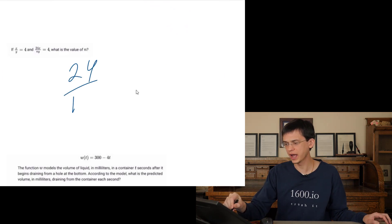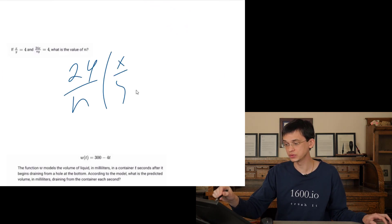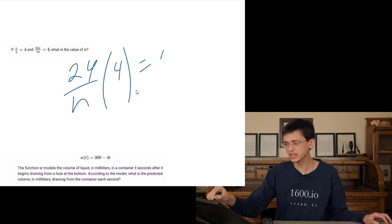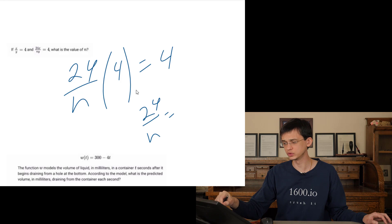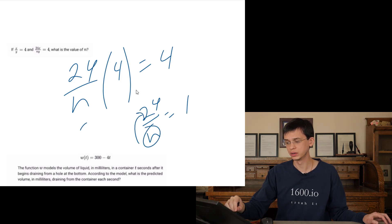So we have 24 over n. x over y equals 4. Divide both sides by 4, and we get 24 over n equals 1. So n has to be equal to 24.